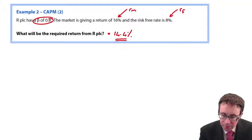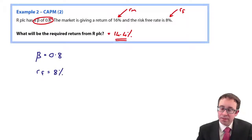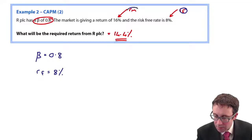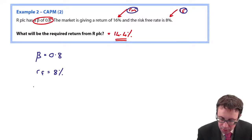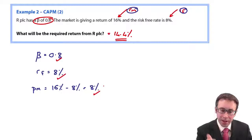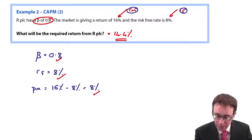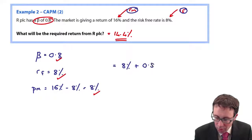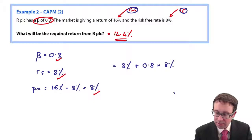What you could be told within that question is imagine you've got beta again as 0.8. Imagine you've got RF as 8 percent. Based upon this, the risk premium is the difference between the two. The premium is the 16 less 8, which is 8 percent. So, you could be given beta at 0.8, RF at 8 percent, and the premium at 8 percent as well.